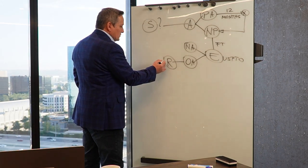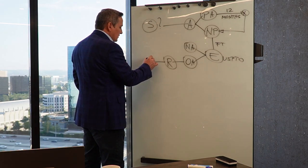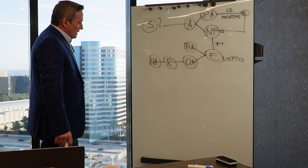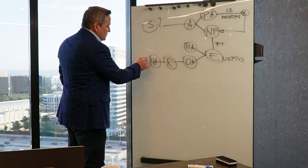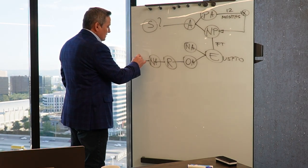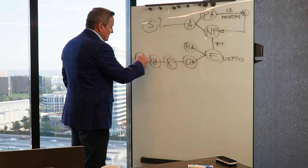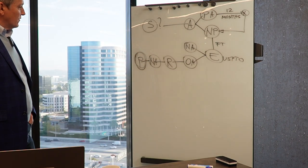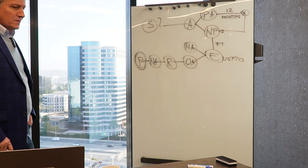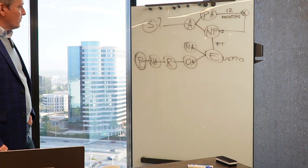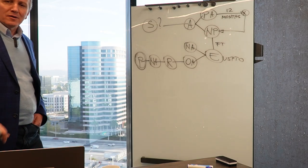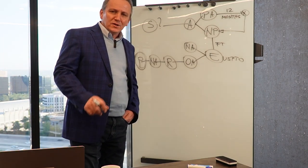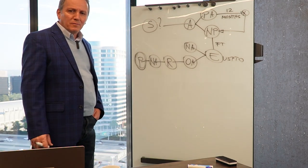If all that effort is successful, you will get the notice of allowance. After paying the issue fees, you will get the patent you are looking for. Pretty much this is the way you go about getting a utility patent for an invention you developed.